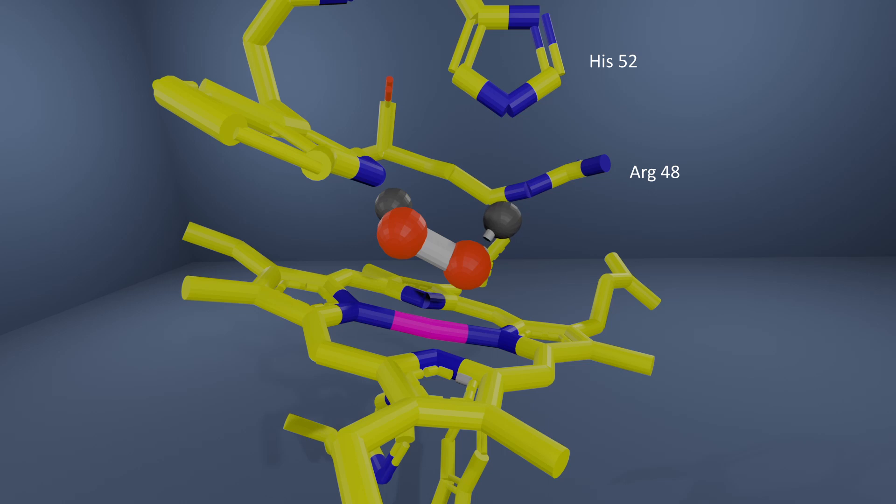The hydrogen peroxide, after deprotonation by histidine 52, becomes more nucleophilic and attacks the iron center to form compound zero.